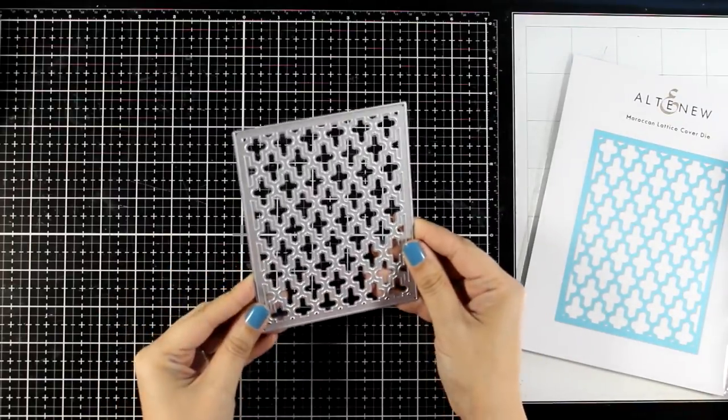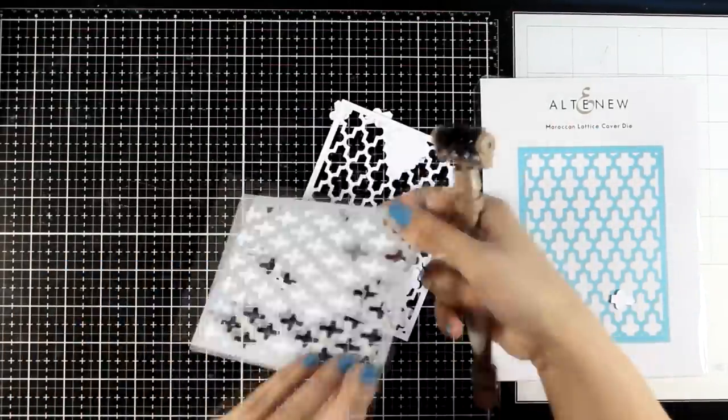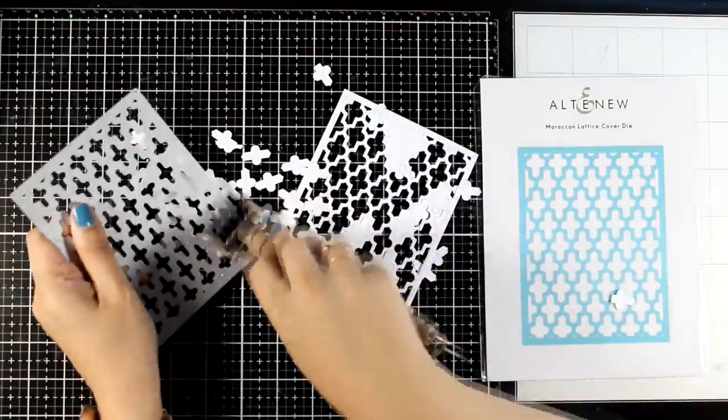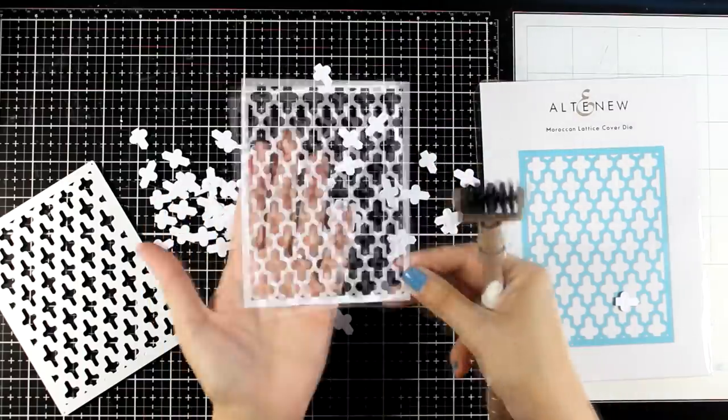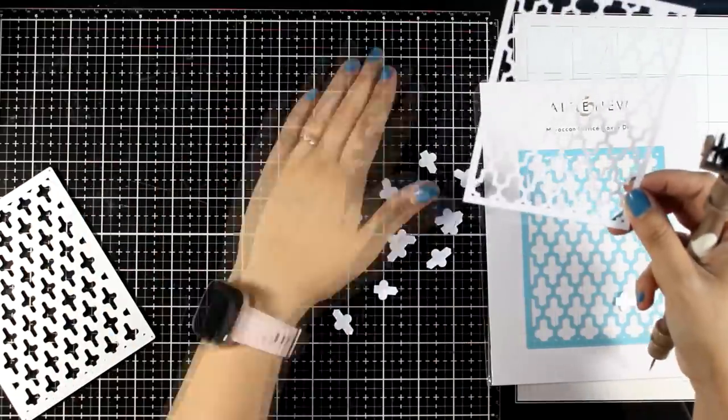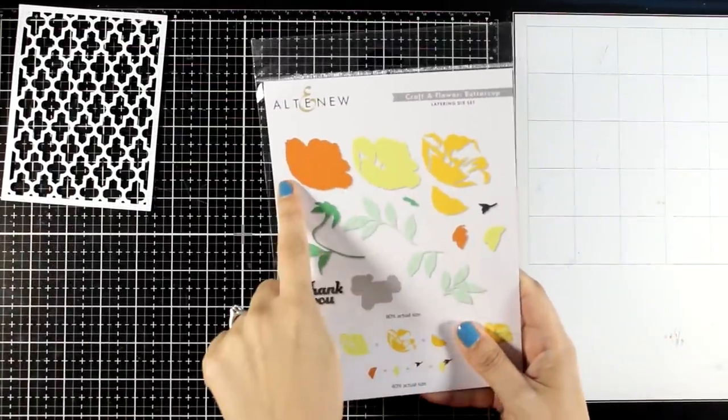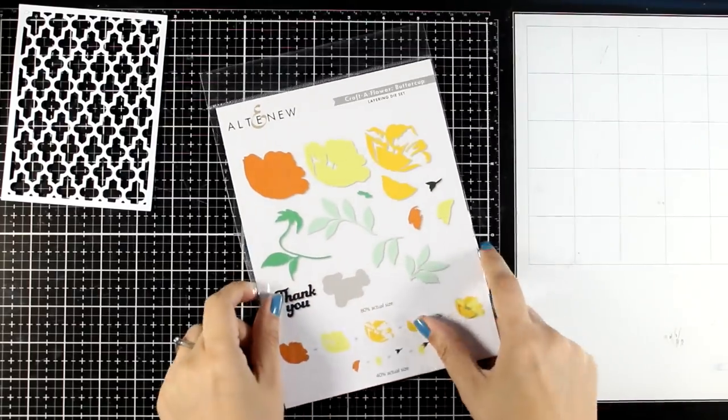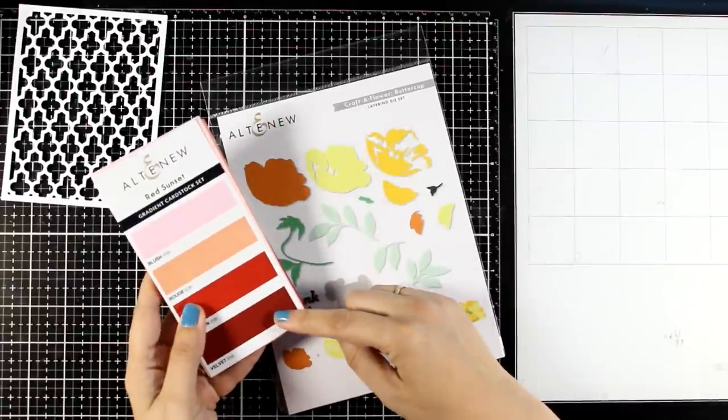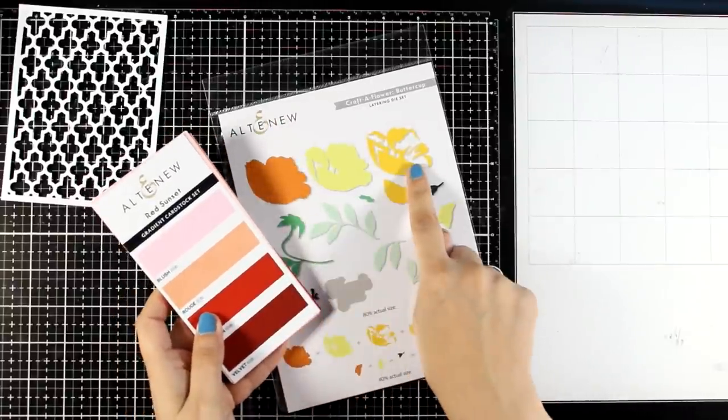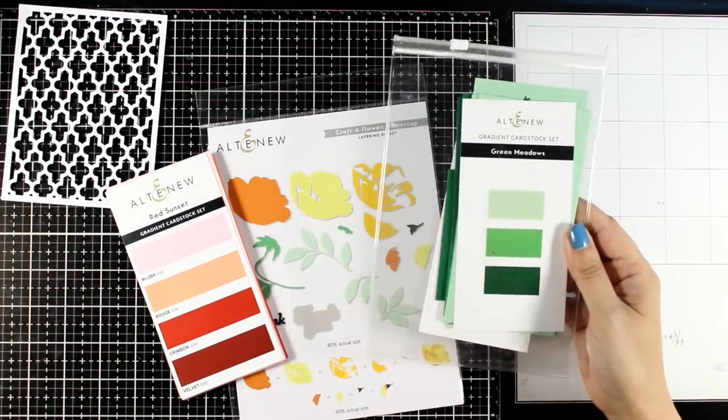So here I used this lovely die, this is the Moroccan cover up die and I did cut it out from white cardstock. It's one of those beautiful backgrounds that you can use again and again on your cards. I'm going to lay it completely flat today on my card but I can think of so many ways to create shaker cards with this one. I'm also going to combine flowers from this die set. This is the craft flower buttercup and I'm going to cut out everything that I need out of the gradient cardstock. I will use these three colors for the flowers and two of the green ones.